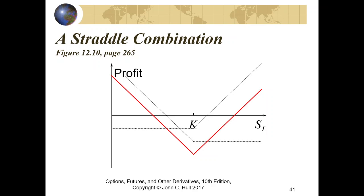We conclude our discussion of chapter 12 by examining the last category of trading strategies, which are called combinations. In combinations, we enter into two or more options of different types — for example, one call and one put, two calls and one put, two puts and one call, and so on.